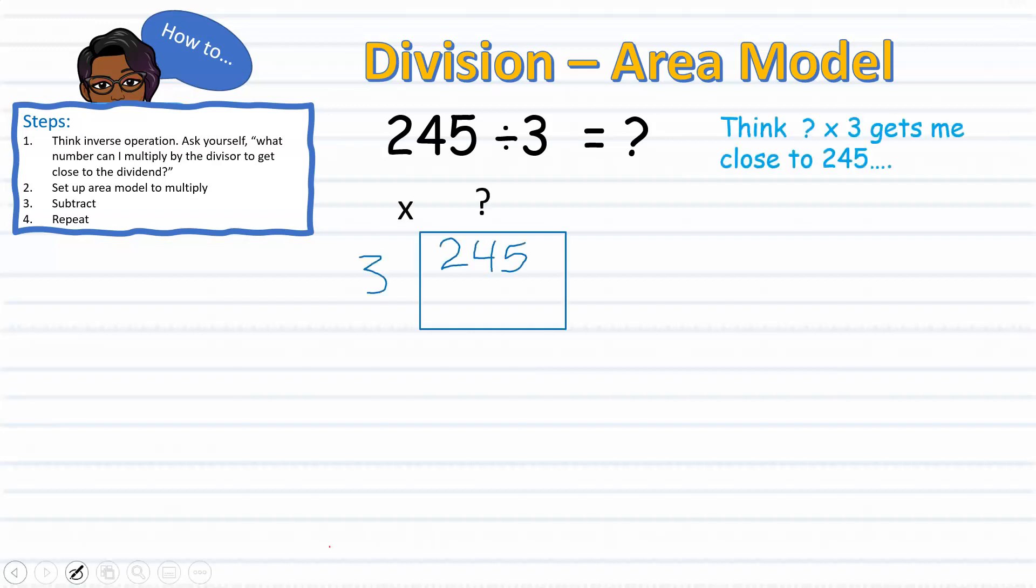In other words, think to yourself, what number times 3 gets me close to 245? Now, this requires that I do a little work off to the side, and I'll start multiplying 3 by multiples of 10.